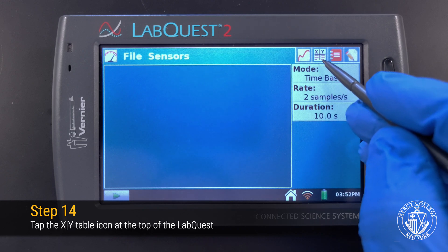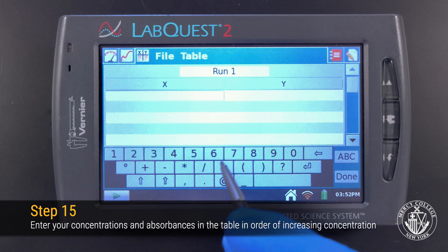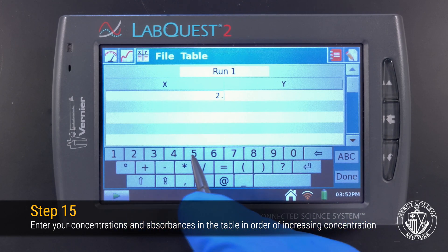Now select the Table tab from the top of the LabQuest. This will bring you to a table where you can enter the concentration and absorbance values you recorded for your standards.